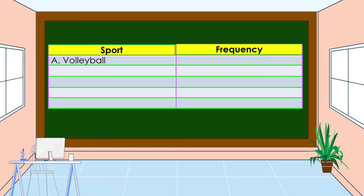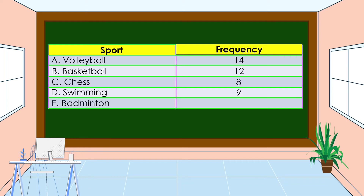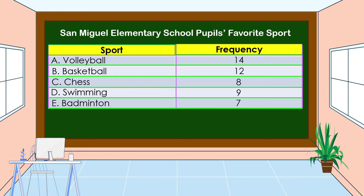So we have: for volleyball, the frequency is 14; for basketball, it is 12; for chess, it is 8; for swimming, the frequency is 9; and for badminton, it is 7. Don't forget to put a title for the table. In this example, the title is San Miguel Elementary School Pupils' Favorite Sport.